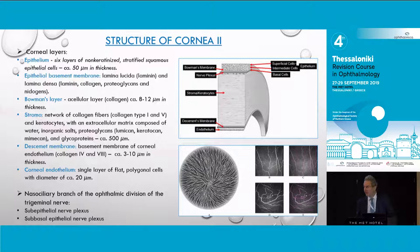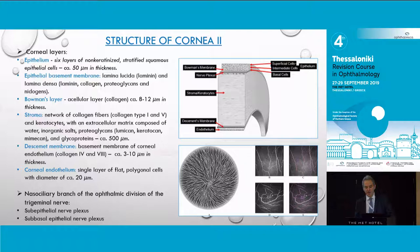Corneal innervation is supplied by the nasociliary branch of the ophthalmic division of the trigeminal nerve, provided by thousands of branches of the sub-epithelial nerve plexus and the sub-basal nerve plexus, which is depicted in this picture and is very relevant clinically for refractive surgery, as I will point out later.